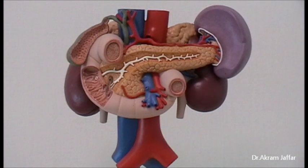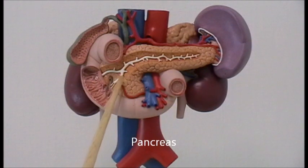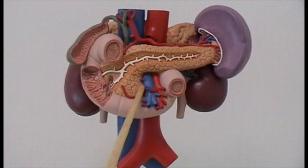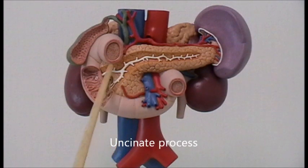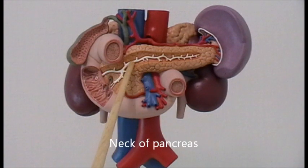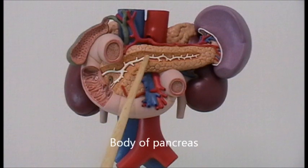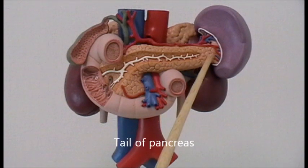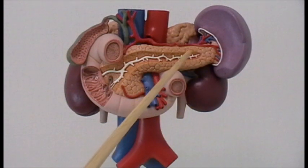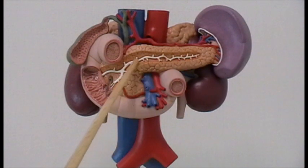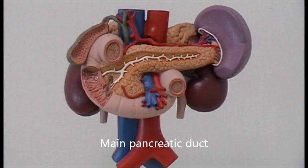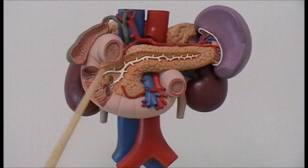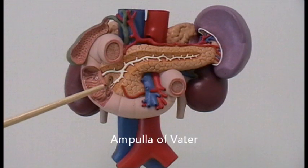Now going into details, this is the pancreas. It has the head and the uncinate process within the C-shape of the duodenum, then the neck, the body of the pancreas, and the tail of the pancreas. Within the pancreas, you can see the major pancreatic duct. The major pancreatic duct unites with the bile duct within the head of the pancreas and they form the ampulla of Vater.